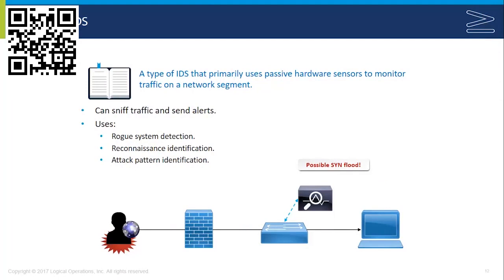There's also a wireless intrusion detection system, which is a specific type of network intrusion detection system that scans radio frequency spectrums for possible threats. And then you have host-based IDS or HIDS, which monitors a particular computer system for unexpected behavior or drastic changes. So NIDS, wireless IDS, and host IDS are your three major kinds of intrusion detection systems.